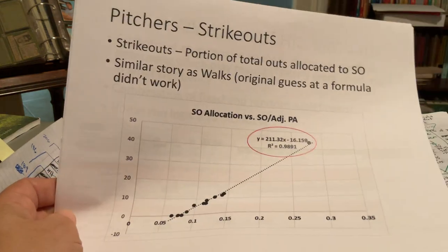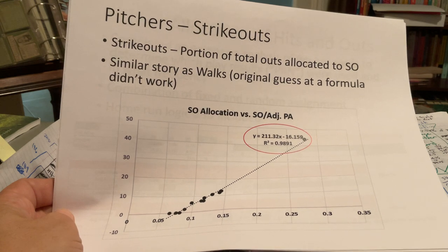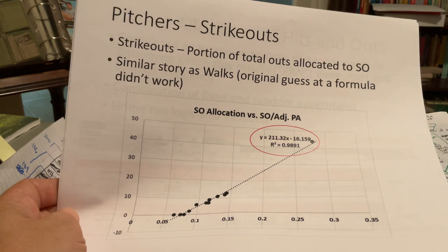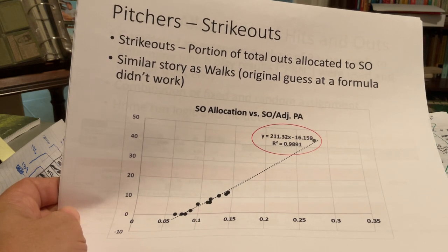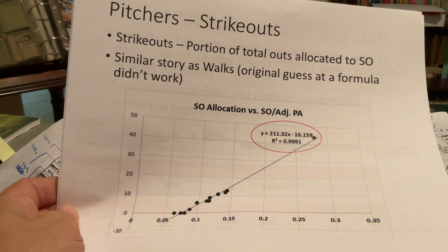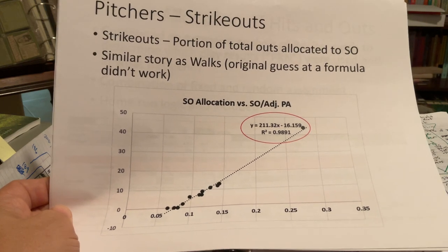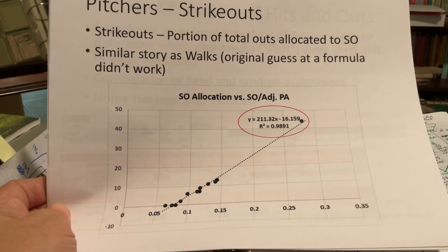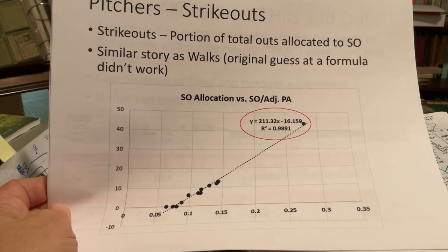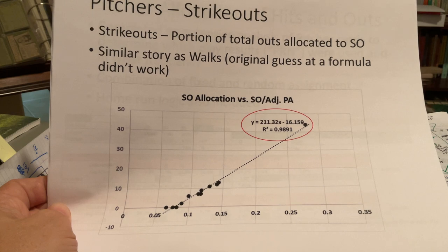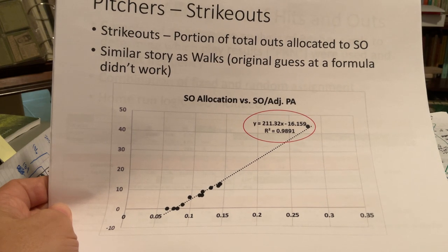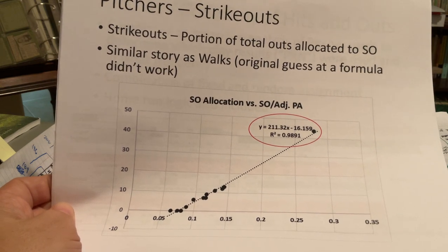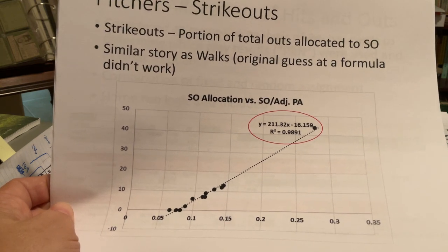Once you know how many outs there are, you want to figure out how to split them between strikeouts, ground outs, and fly outs. I summoned the correlation analysis again — very similar to walks — because my original formula did not work and it's not exactly the same as Sports Illustrated. Once again I came up with a very highly correlated relationship and was able to use that correlation formula in my spreadsheet.